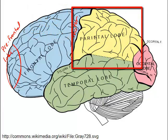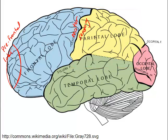The parietal lobe contains a sensory area immediately behind the motor area of the frontal lobe, and in fact the areas mirror one another. Body regions with the highest density of receptors are represented with the largest areas here. The parietal lobe is also involved in short-term memory.